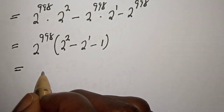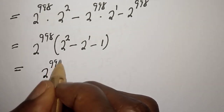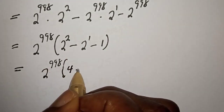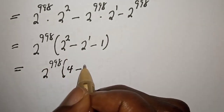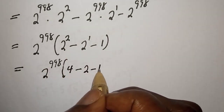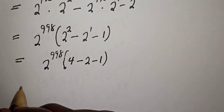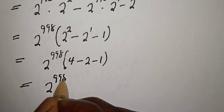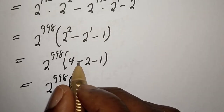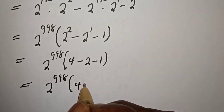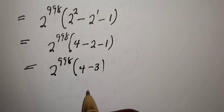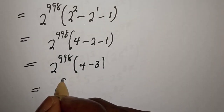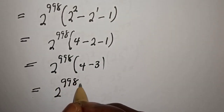Equal to 2 raised to power 998 bracket: 2 squared is 4, minus 2 raised to power 1 is 2, minus 1. Equal to 2 raised to power 998 bracket 4 minus 3, equal to 2 raised to power 998 bracket 1.